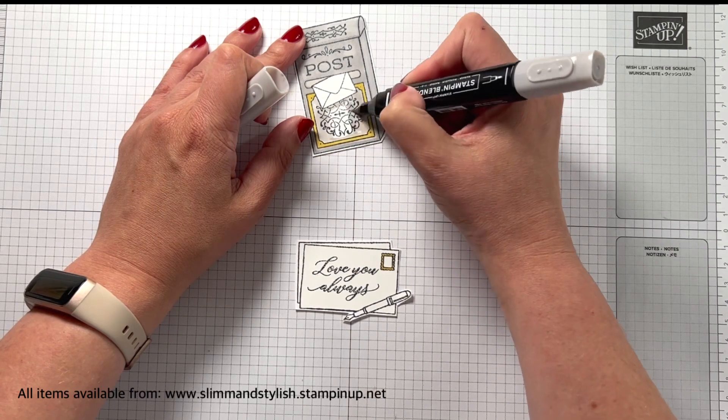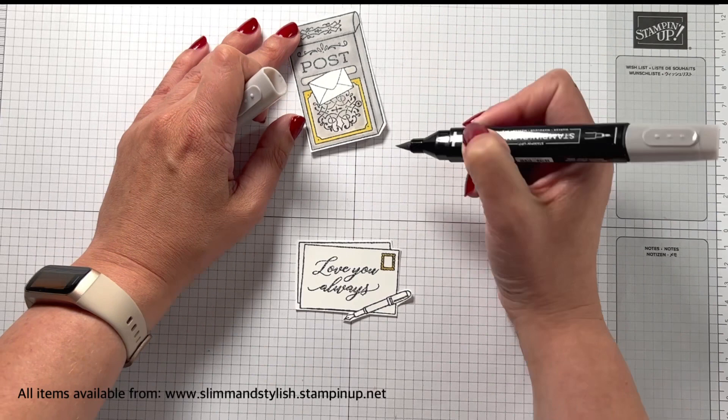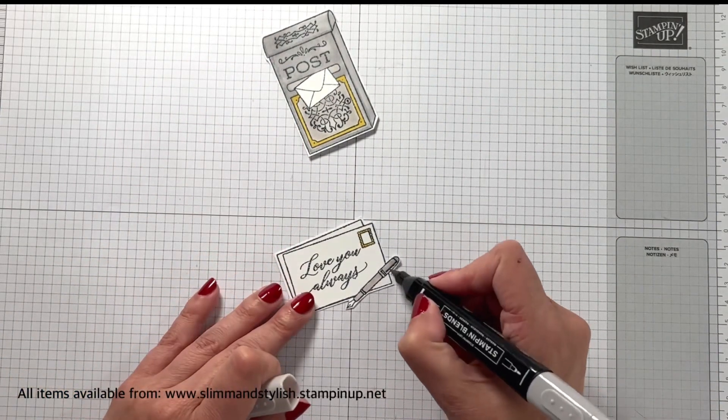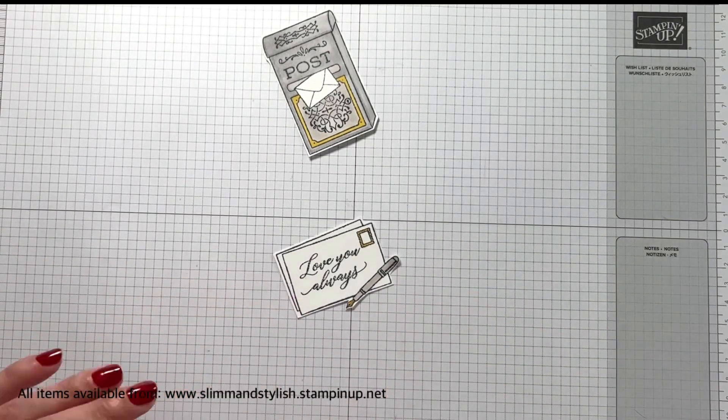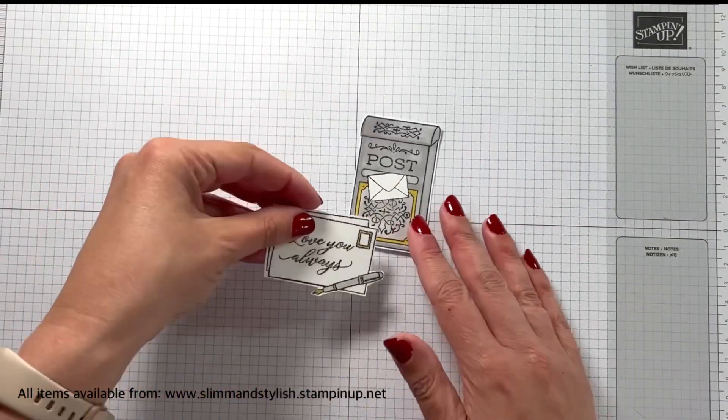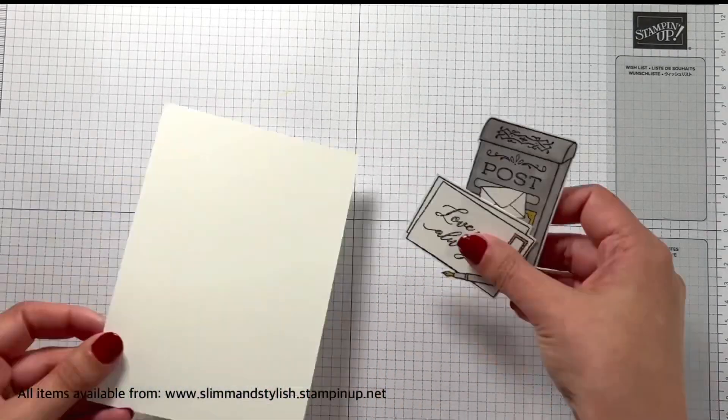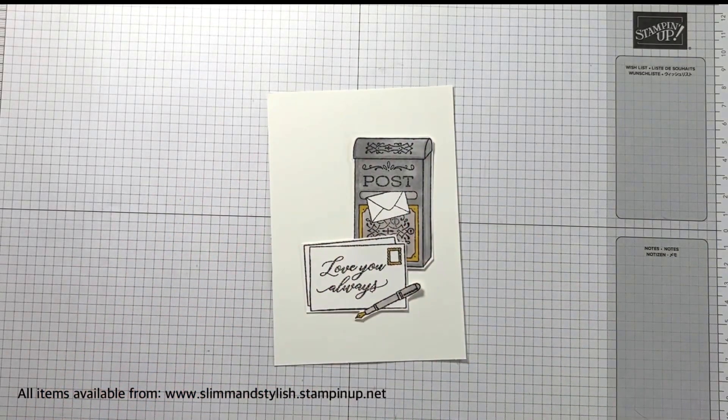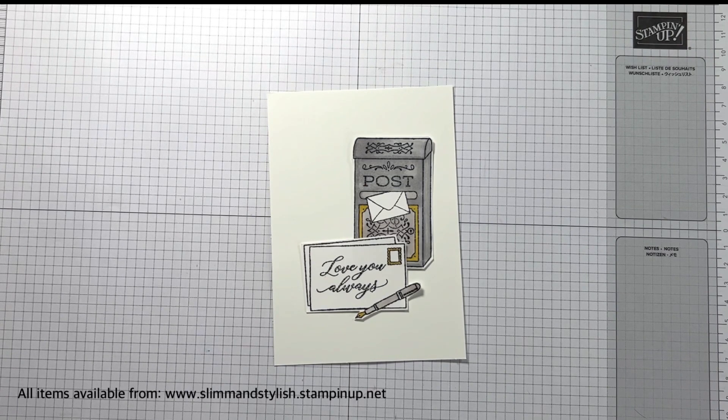So you just finish colouring that in. So once you've finished colouring them in, all you need to do is work out how you want to position them onto your cardstock. So this is 10.5 by 14.8 centimetre cardstock, the exact same size as my card base and looking at it, I just thought it looked a little bit blank.